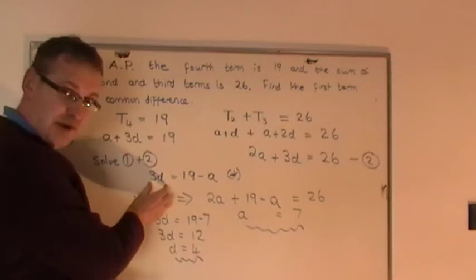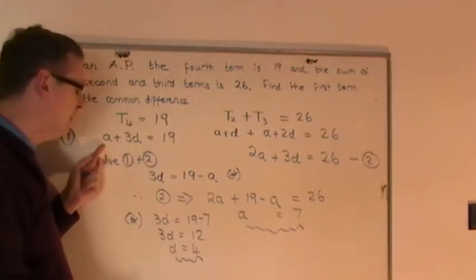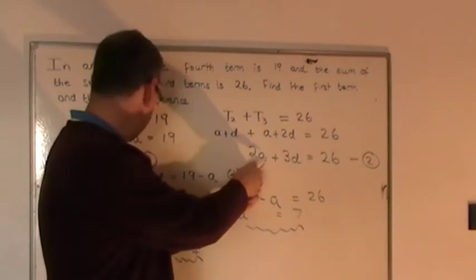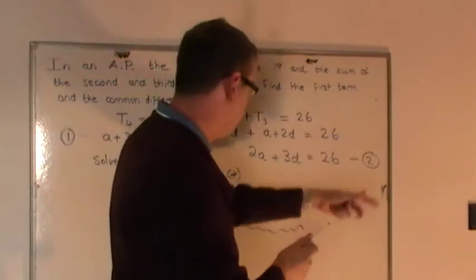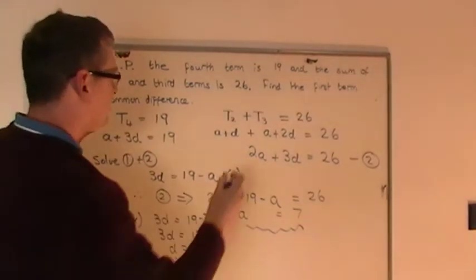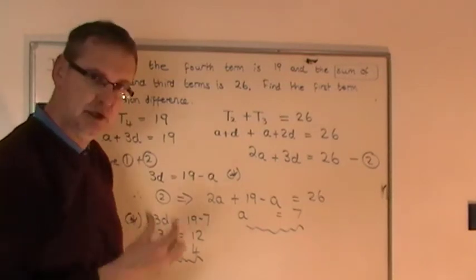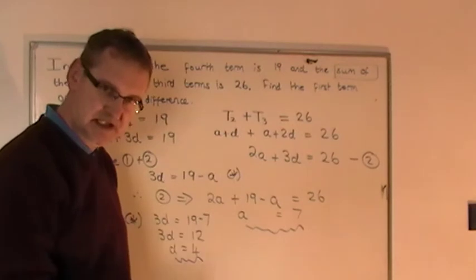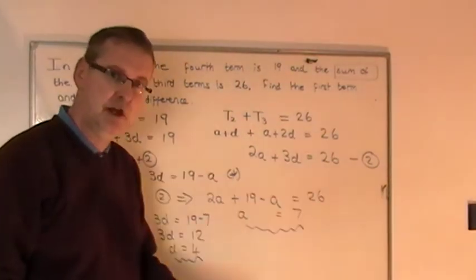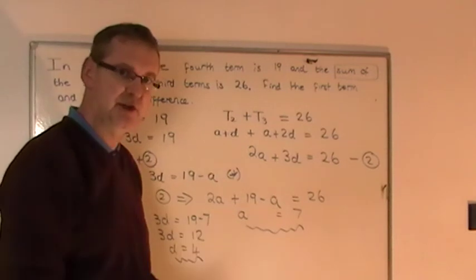If you didn't like this method, whereby I got 3D on its own and subbed it in the other equation, then by all means, go to equation 1 and get A on its own. A equals 19 minus 3D, and then sub the A value into there. So you get two lots of 19 minus 3D plus 3D equals 26, and you'll be able to take it from there. That's the end of this example. Very straightforward, and I would suggest to you that the sum of the second and third terms is something you need to be very familiar with and confident with, because it's T2 plus T3 in this particular example. Once again, remember, if it says the sum of the first ten terms, it will be S10 you use. But if it says the sum of only, say, the ninth and tenth term, you'd use T9 plus T10 as your expression. That's the end of this video.